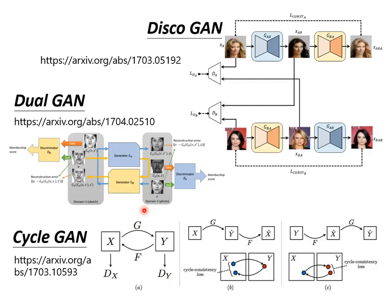In addition to Cycle GAN, you may have heard about many other GANs that can do style conversion, such as Disco GAN and Dual GAN. What's the difference? It's actually the same — you will find that Disco GAN, Dual GAN, and Cycle GAN are actually the same things with the same idea. However, they were proposed by different teams nearly simultaneously, and all came up with almost the same idea. The three papers were uploaded to arXiv in March 2017, April 2017, and March 2017 respectively.